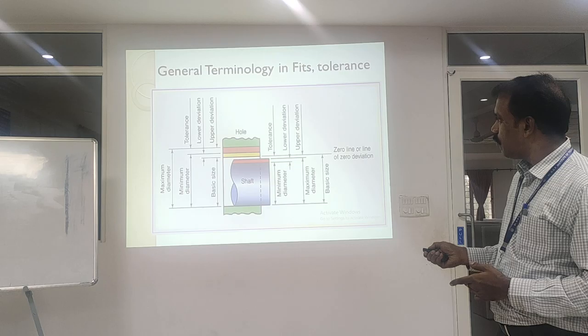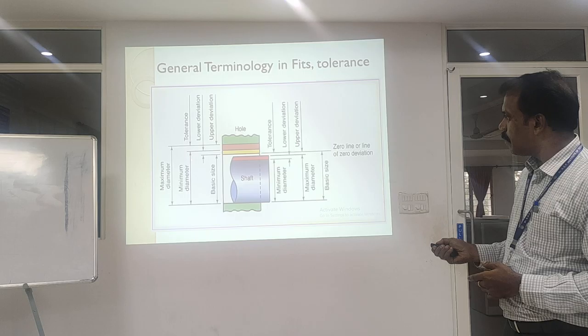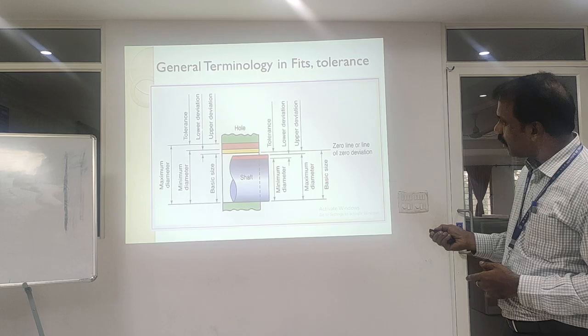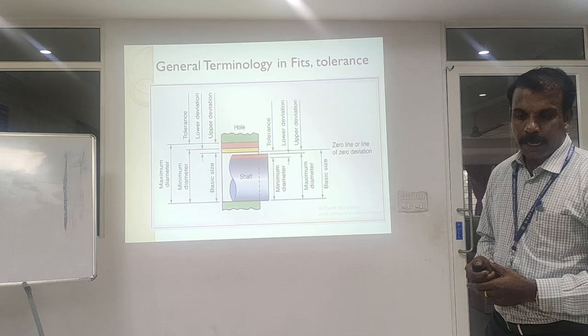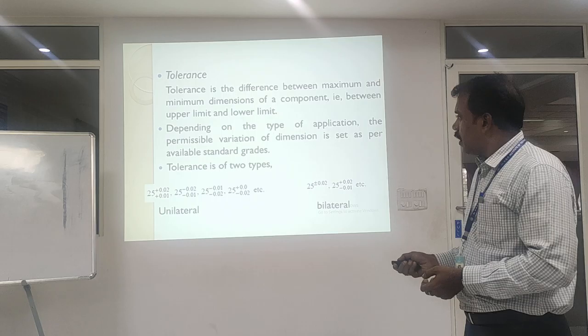When you come across the hole, you have the basic size, the minimum diameter of the hole required, and the maximum diameter of the hole required. Tolerance is the difference between the maximum diameter and the minimum diameter — you can call it the difference between the lower deviation and the upper limit. That is the case for mating parts.